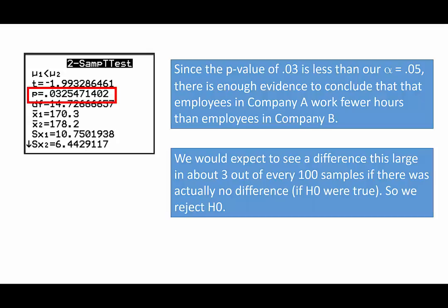So what does that p-value mean? Again, as we've seen earlier in this course, we would expect to see a difference this large, a difference of close to about eight hours, in about three out of every 100 samples if there was actually no difference, if H0 were actually true. So we're going to reject H0.